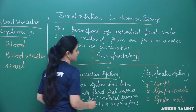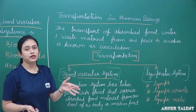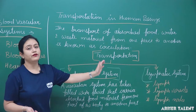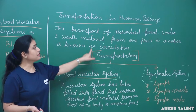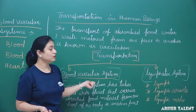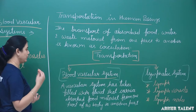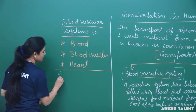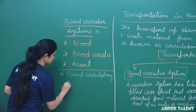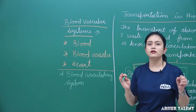Since the blood vascular system has tubes filled with fluid and helps in the circulation of absorbed food and water from one place to another, it is also known as the blood circulatory system. Blood circulates throughout the complete body and carries absorbed food material from one part to another.